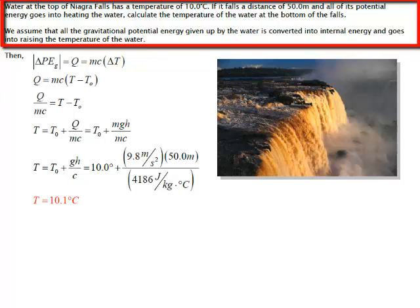We've got a waterfall, in this case Niagara Falls, and the water at the top of Niagara Falls has a temperature of 10 degrees Celsius. If it falls a distance of 50 meters and all of its potential energy goes to heating the water, that's that value of Q in our relationship.